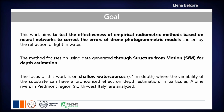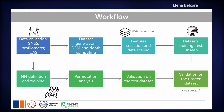Here we have a short workflow. First, data collection, in which we performed drone surveys using multi-rotor systems with different sensors. Then we collected depth information and river bottom elevation using dual-frequency GNSS receivers and profilometers. The dataset was generated through a standard structure-from-motion procedure, and depth was calculated as the difference between the water surface and the real elevations measured by GNSS and profilometers.